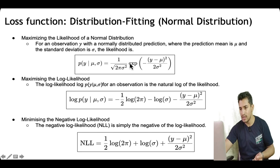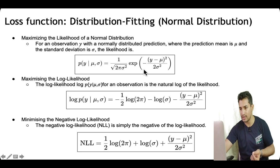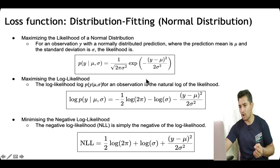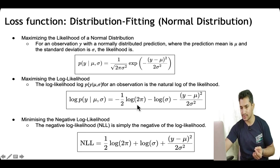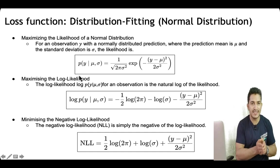When we take the log of the likelihood, the two multiplying terms — 1 over root(2π·σ²) and the exponentiation term — become additive in the log world. For the second term, the log and exponential cancel out. For the first term, it can be broken down into two terms. So maximizing the log likelihood is the same as minimizing the negative log likelihood.